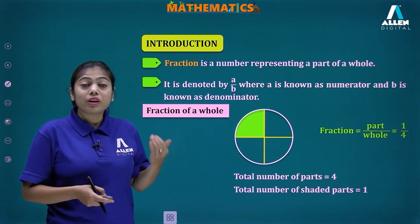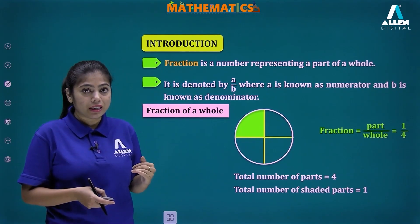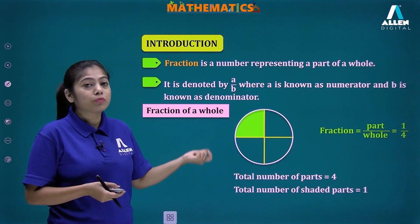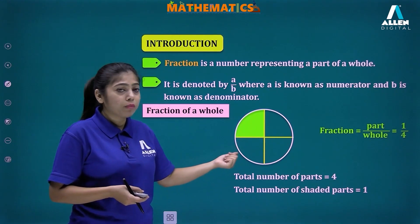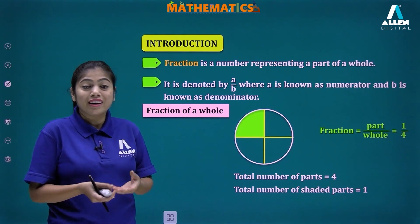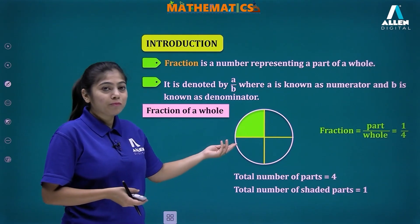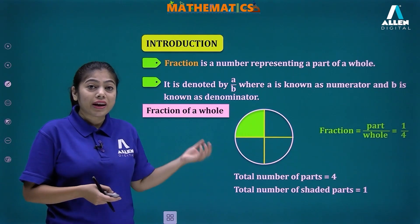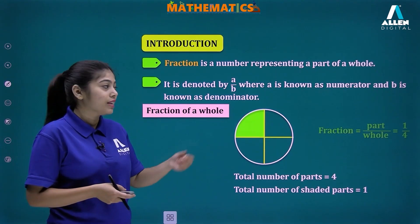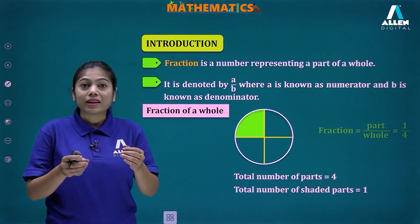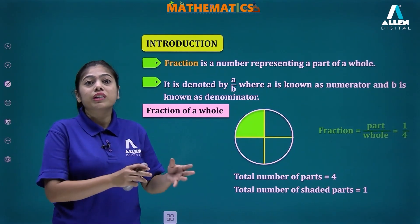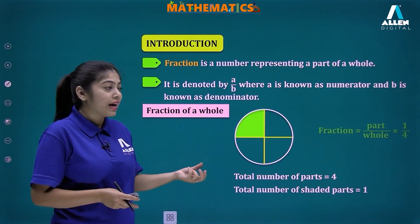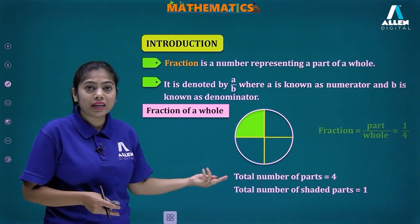Fraction is written as part upon whole — we write the part in the numerator and the whole in the denominator. How many parts are shaded? Only one, so one is written in the numerator. How many total equal parts are there? Four, so four is written in the denominator. Hence the fraction of shaded parts equals one upon four — one part out of a total of four equal parts.